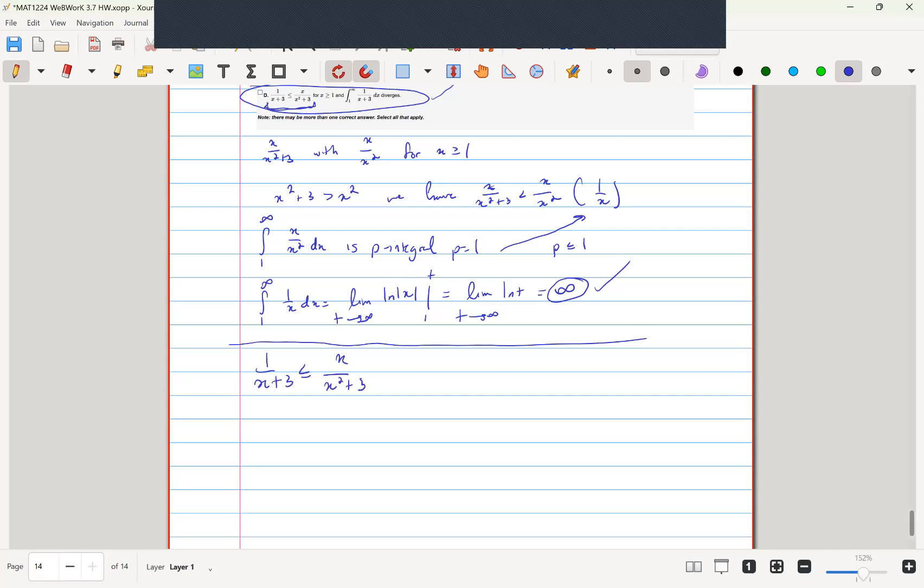x squared plus 3 is greater than or equal to x times x plus 3, which simplifies to x squared plus 3 less than or equal to x squared plus 3x. Subtracting x squared from either side, you get 3 less than or equal to 3x.